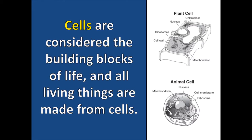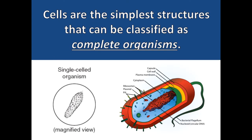All of the organelles and cell parts come together to create cells. Cells are considered the building blocks of life, and all living things are made from cells. Cells are the simplest structures that can be classified as complete organisms, meaning that there are some living things that are made of just one cell.